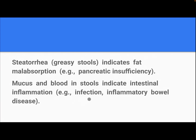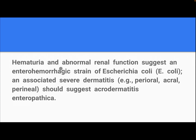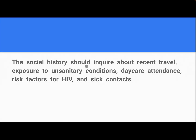Mucus and blood in stool indicate intestinal inflammation, infection, or inflammatory bowel disease. In toddlers, the presence of undigested food may indicate a normal variation or chronic non-specific diarrhea. Overflow incontinence secondary to constipation and fecal impaction may be mistaken for diarrhea. Hematuria and abnormal renal function suggest an enterohemorrhagic strain of E. coli. Associated severe dermatitis, perioral and perianal, should suggest acrodermatitis enteropathica.